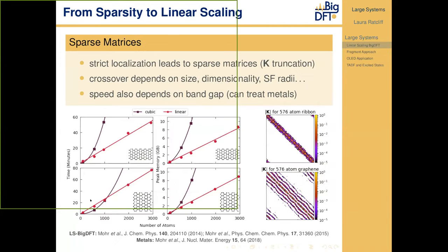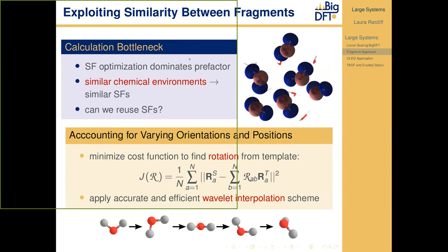What takes most time in linear scaling calculations? It is mainly the support function optimization, which dominates the pre-factor, because we often need many steps to converge to well-optimized support functions. But the nature of these support functions depends on local chemical environment. For example, in a small water droplet the support functions look very similar between different water molecules, as the internal molecular environment dominates the form they take. So the question is: can we take advantage of this similarity and reuse support functions for similar chemical environments?